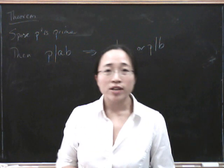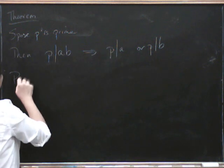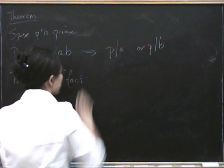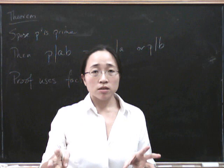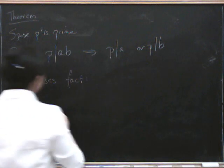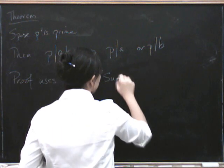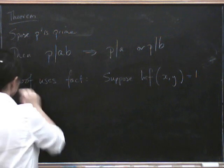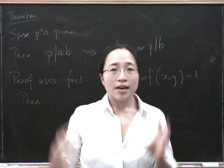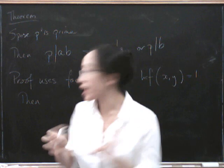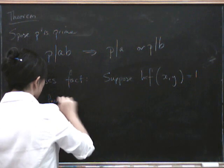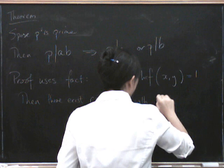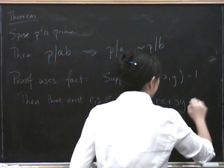To prove it, we're going to have to use a rather sneaky result. So the proof uses the following fact. It's about what happens if you have two numbers whose highest common factor is 1. So suppose that the highest common factor of x and y is 1. Then we can do this clever thing, where we can express 1 as some combination of x's and y's like this. Then there exist r and s integers with r times x plus s times y equals 1.